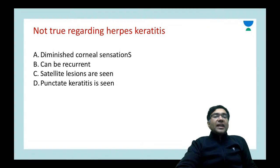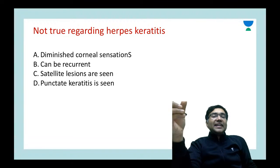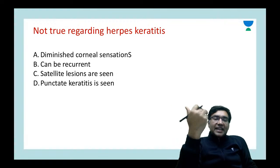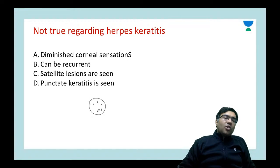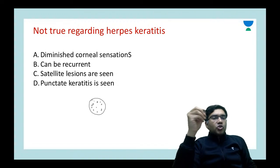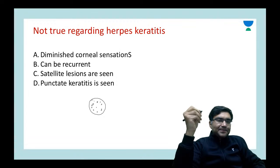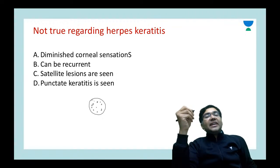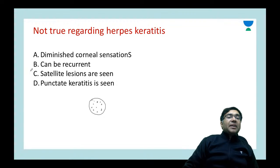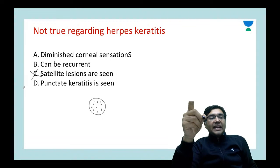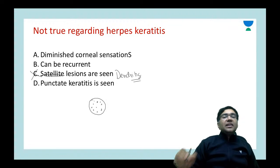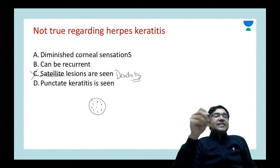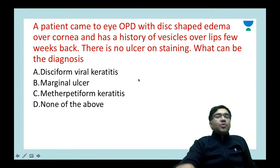Not true regarding herpes keratitis: options are diminished corneal sensation, it can be recurrent, satellite lesions are seen, or punctate keratitis is seen. Remember, satellite lesions are not seen in herpes simplex keratitis — they are seen in fungal ulcers. In herpes keratitis you get dendritic lesions. Punctate keratitis — small epithelial spots — can be seen in herpes keratitis. So the answer is B: satellite lesions are seen — this is not true for herpes keratitis.